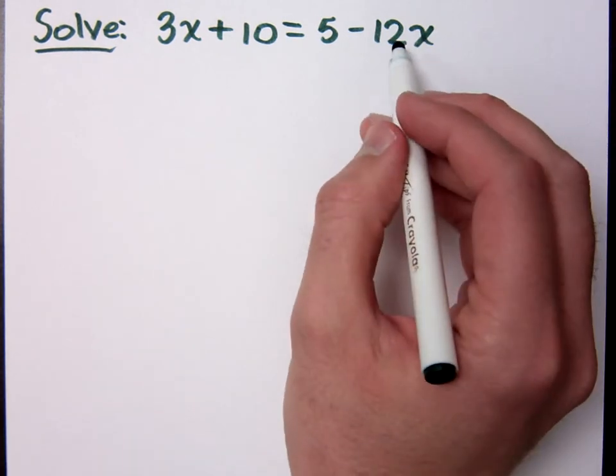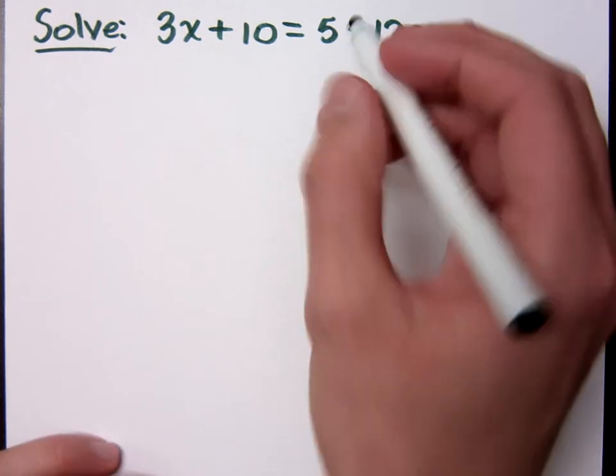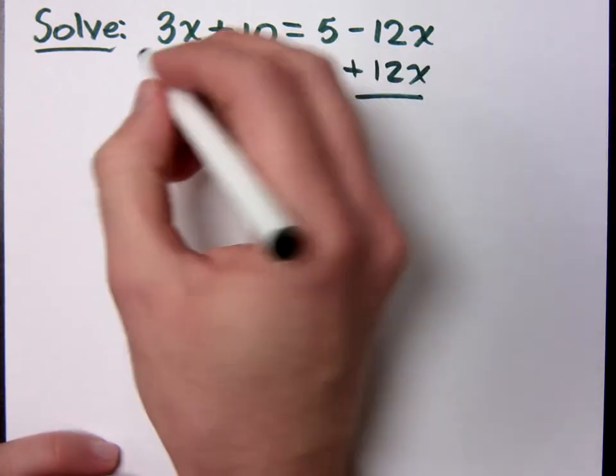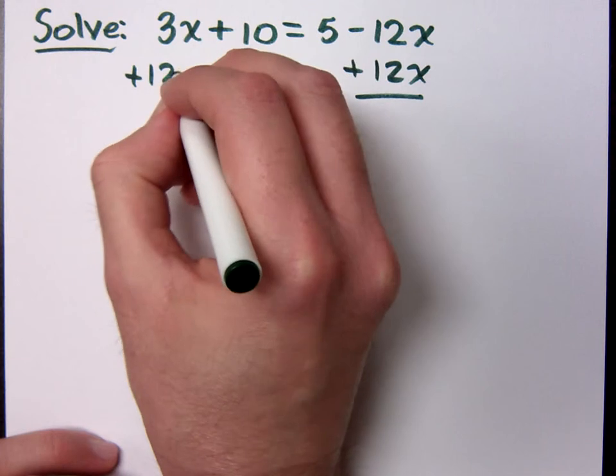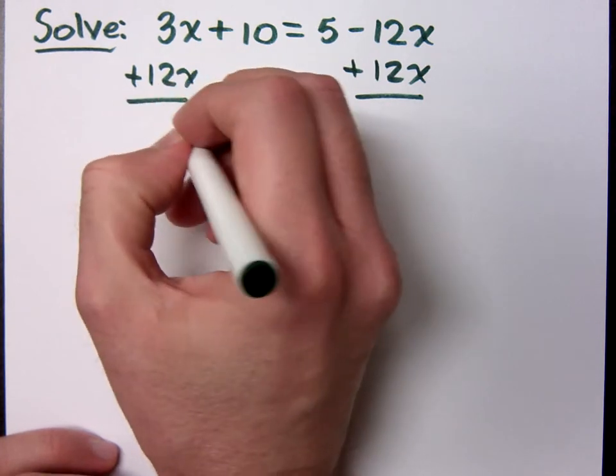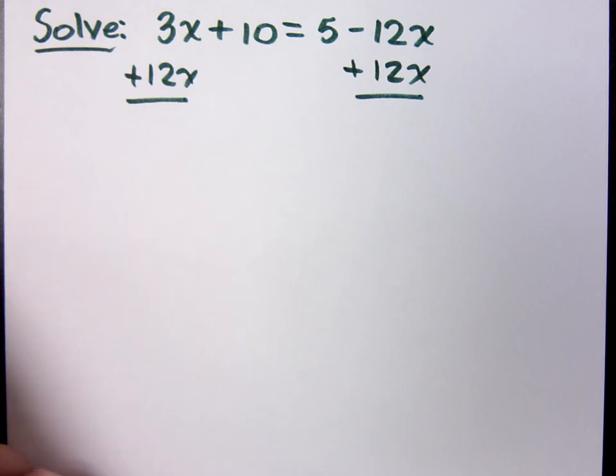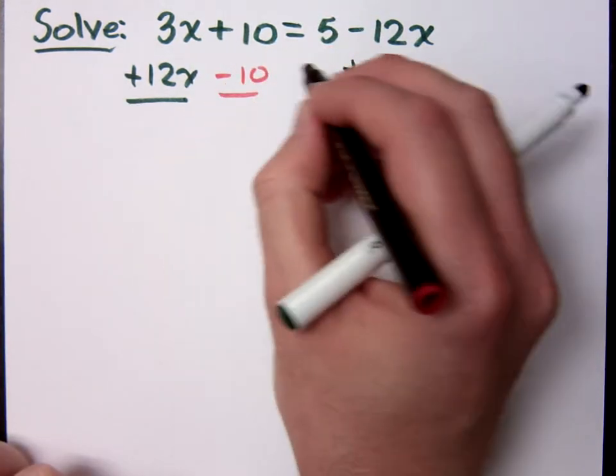Now, in this problem, I would move the 12x to the left so I could keep my coefficient of x positive. How about you guys? Anybody do that? Alright, now if I'm going to move it to the left, I might as well go ahead and move my 10 to the right. Do you all agree?